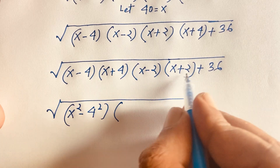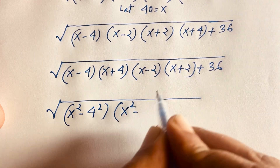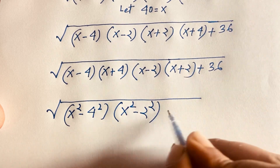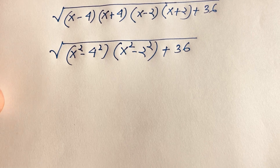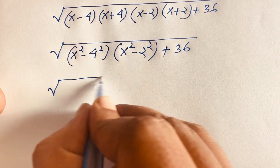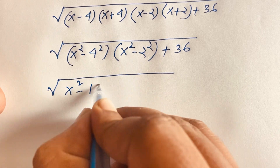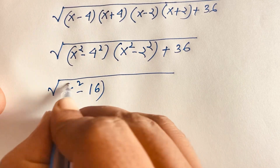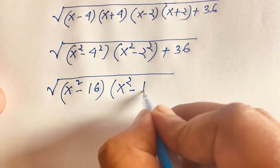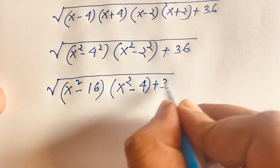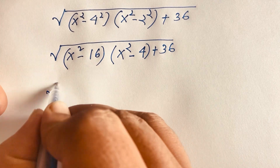Following the same rule a squared minus b squared equals (a plus b)(a minus b), we simplify: 4 squared is 16 and 2 squared is 4. So we have the square root of (x squared minus 16) times (x squared minus 4), plus 36.